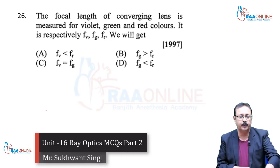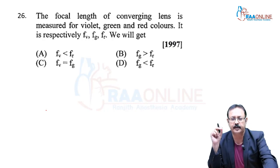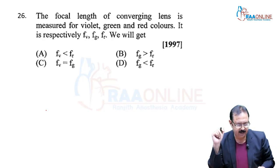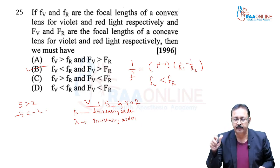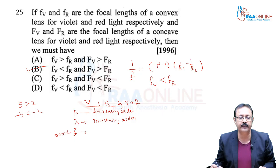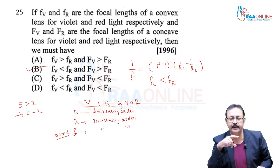Now we are moving towards problem 26. The focal length of a converging lens (convex lens) is measured for violet, green, and red. As we solved this previously, Fv is less than Fr in terms of focal length for a convex lens. So Fv is less than Fr means it is in increasing order.